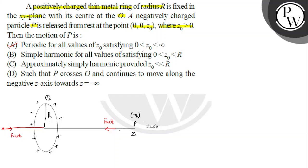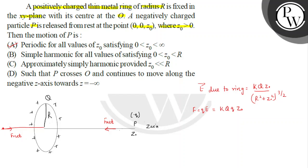Option B says the motion is simple harmonic for all values satisfying 0 < z₀ < r. The electric field due to the ring on its axis is E = kqz₀ / (r² + z₀²)^(3/2), and the force on the particle is F = qE = kq²z₀ / (r² + z₀²)^(3/2). Since the force is in the opposite direction, we place a negative sign.